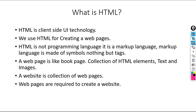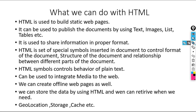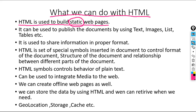Now let's understand what we can do with the help of HTML. HTML is used to build static web pages. A static web page is one which does not change as per user request — meaning the content will be the same for all users. Based on a user request, the content of the web page will not change for that particular user. So content that is the same for all users is known as a static web page.